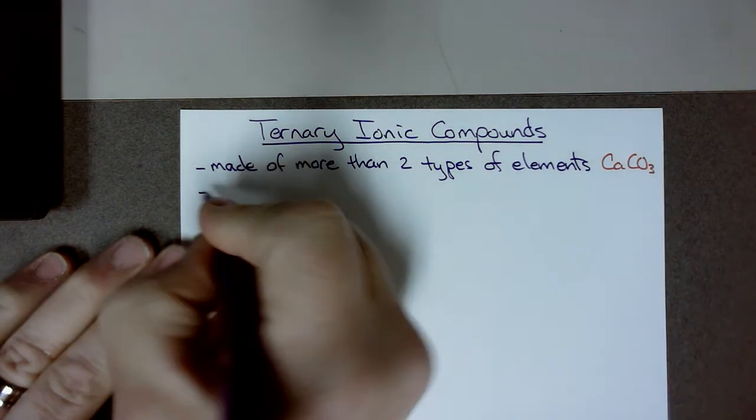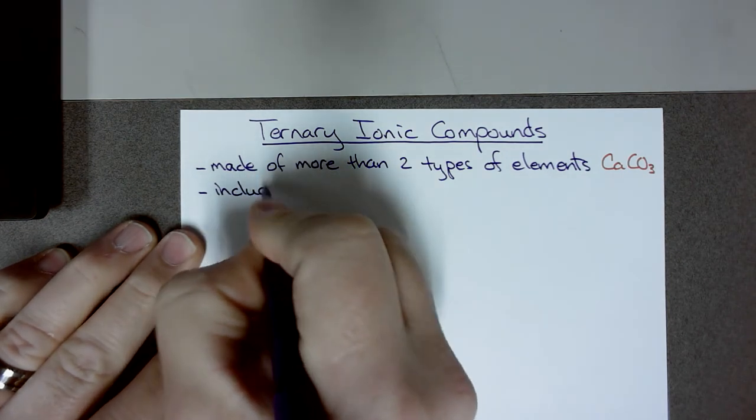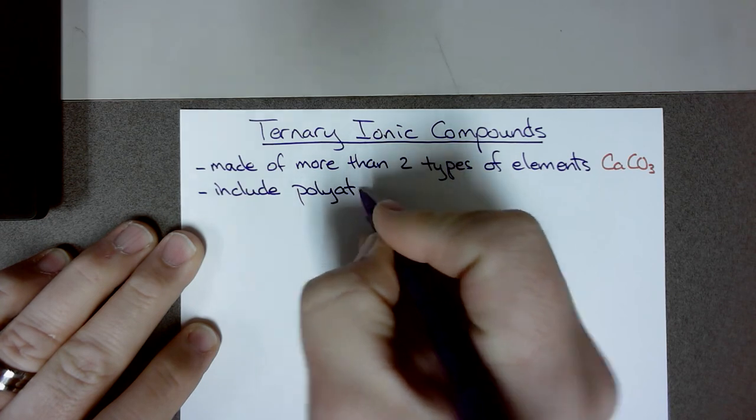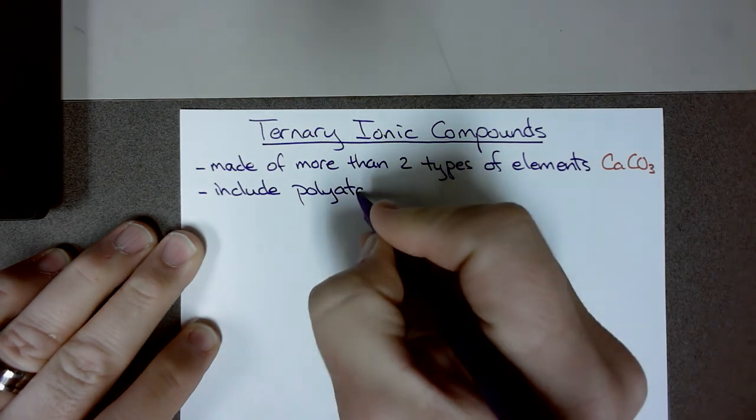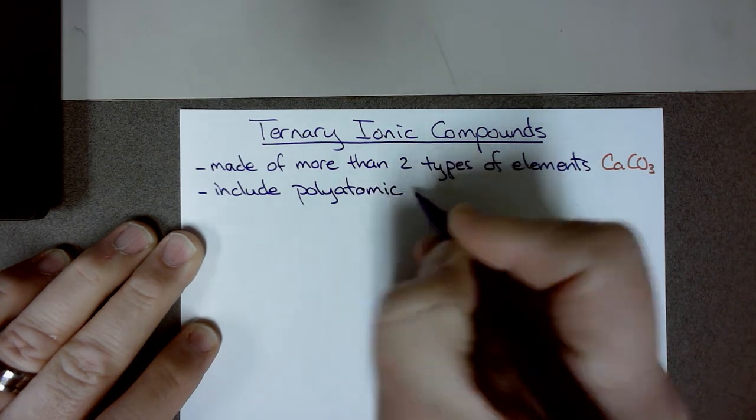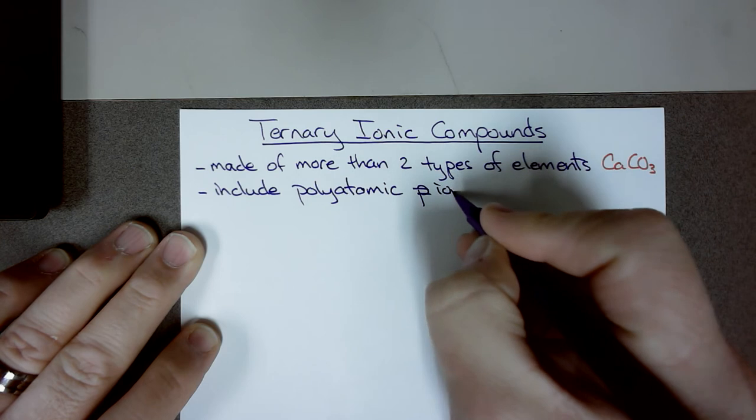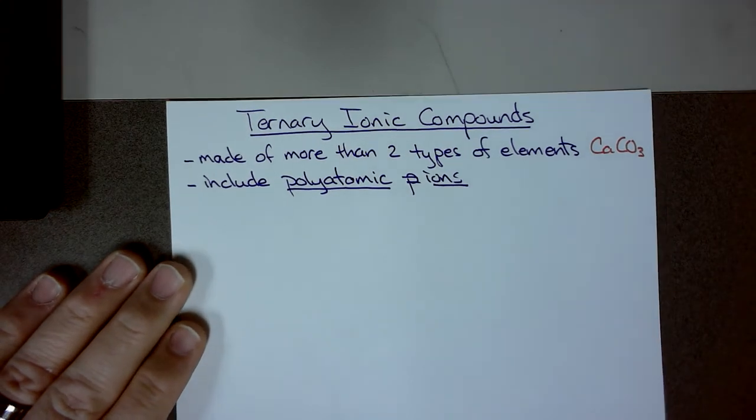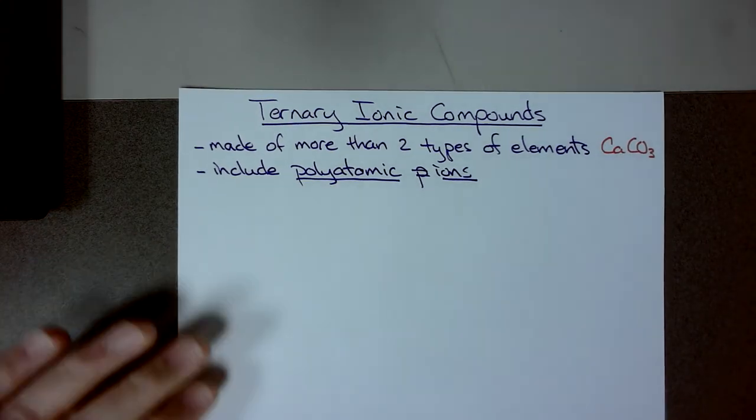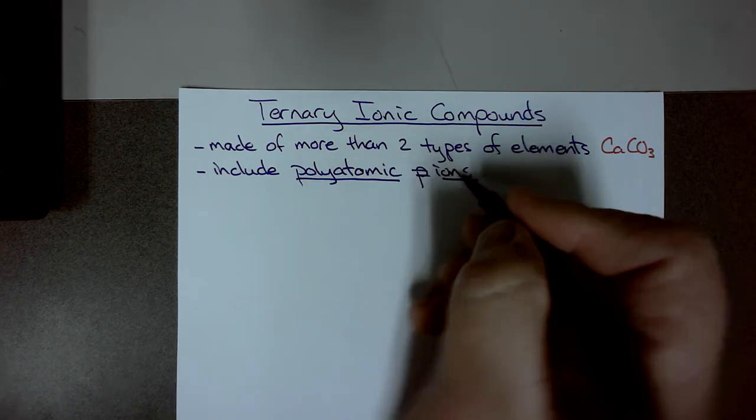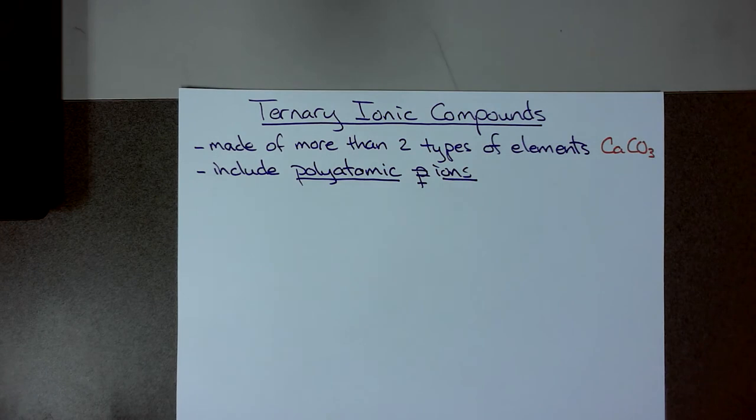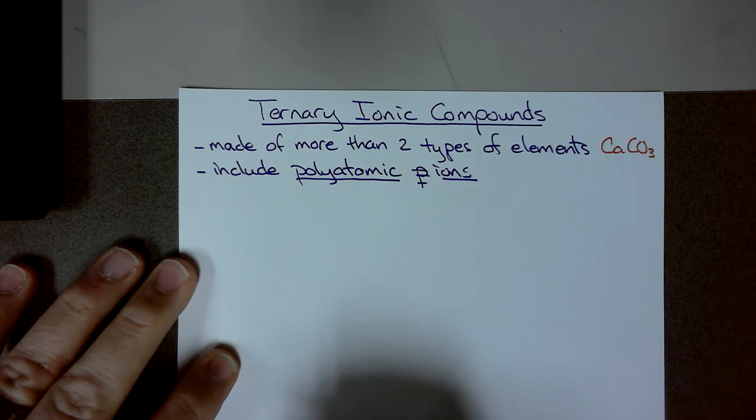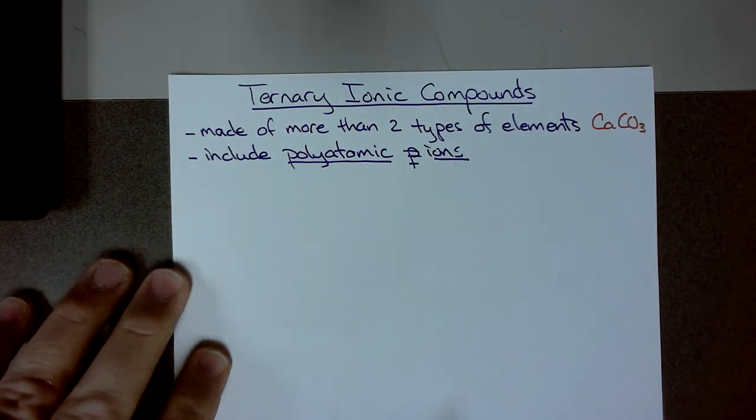And these include polyatomic ions. Now polyatomic, poly meaning more than one, so these are ions that are made up of more than one type of element. Now there are several different polyatomic ions and I'm going to give you a list of the nine most common. You need to memorize these because you do not get to use a list on your test.